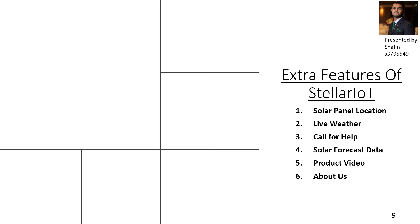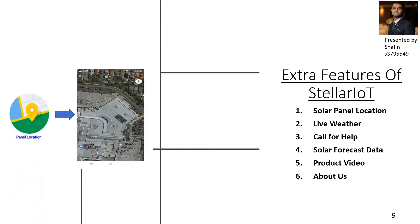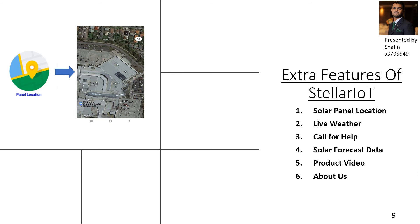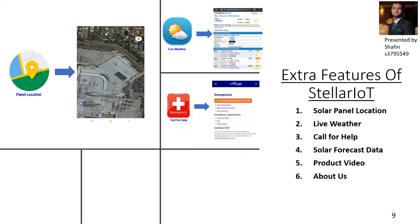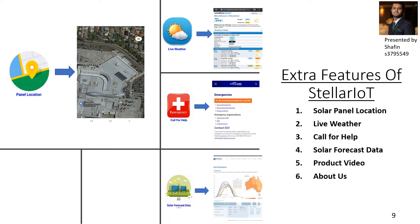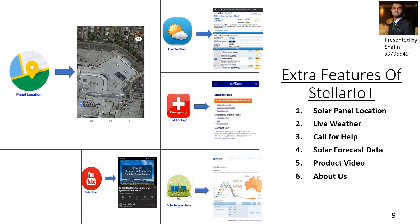There are five extra features in the Stellar IoT mobile application. It has a panel location icon showing the location of the solar panel using Google Maps. It also has a live weather option providing weather condition updates up to seven days. There is a 'Call for Help' icon where users can get contact information for emergency services including electricity, gas, and health services all over Victoria. By clicking the solar focus data icon, users get live solar radiation data all over Australia. A YouTube icon lets users watch the video demonstration on their phone.